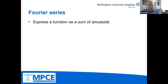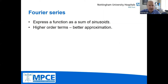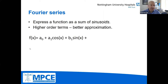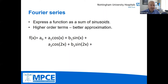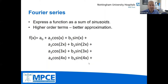That's a Taylor series — a series of polynomials. With the Fourier series we effectively do the same thing except the function is now a sum of sinusoids: a sum of sine and cosine waves. The higher order terms we have, the better approximation we have. Our first order term equals a constant plus a cosine term plus a sine term, then we add cosine and sine at twice the frequency, then three times the frequency, and so on, adding more and more higher order terms.